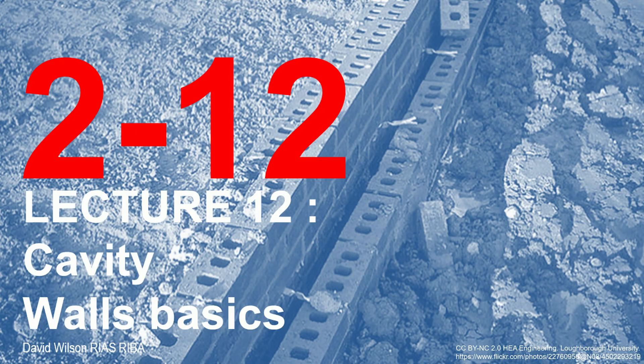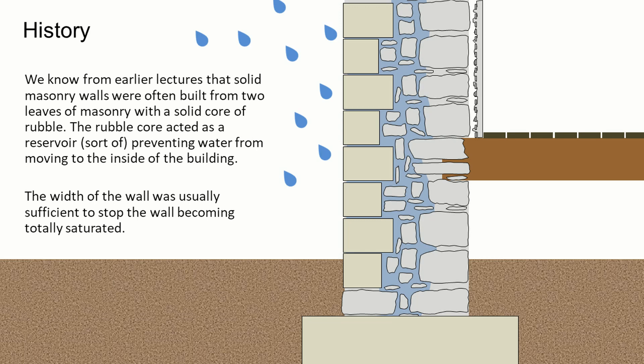Welcome to this, the twelfth lecture in the series on masonry construction. This lecture will look at the basics of cavity wall construction. Previously we looked at historic walls and we know that they were made from two leaves of stonework with a rubble core between them, and this rubble core acted as a reservoir storing water and preventing it from moving from the outside to the inside of the building.